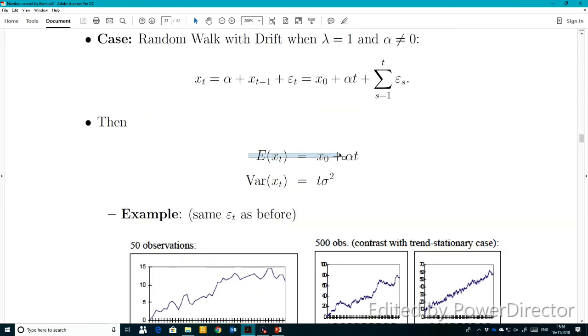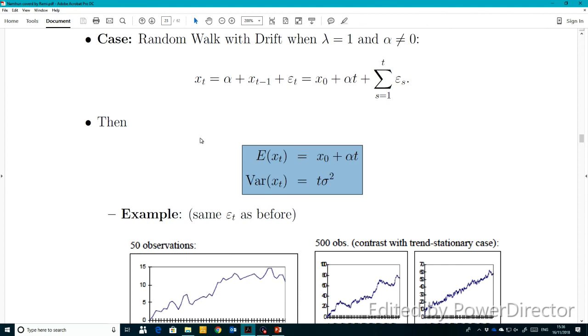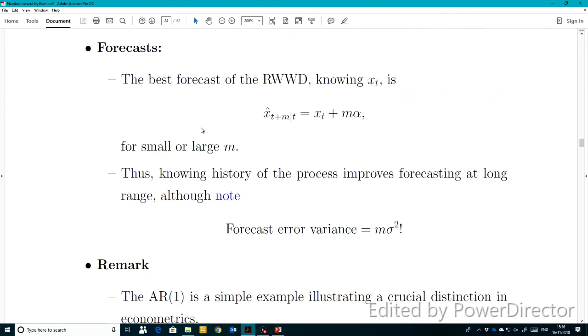You can easily prove that E(xt) = x0 + αt and the variance of xt equals t·σ². I think you can easily find this stuff just by following the mathematical formula sheet that I have given you.